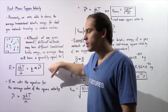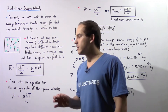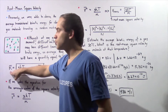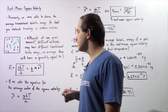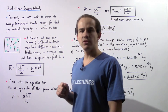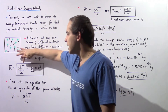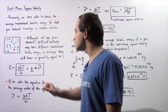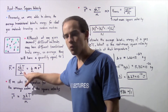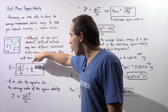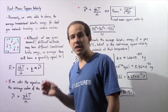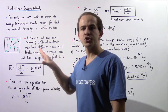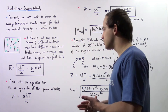In the previous lecture we derived the following equation using the kinetic molecular theory of ideal gases. The average translational kinetic energy of an ideal gas molecule is equal to 3 multiplied by k, the Boltzmann constant, multiplied by T, the temperature in Kelvin, divided by 2. This is equivalent to one half multiplied by m, the mass of the molecule, multiplied by the average value of the square of the velocity of that molecule.